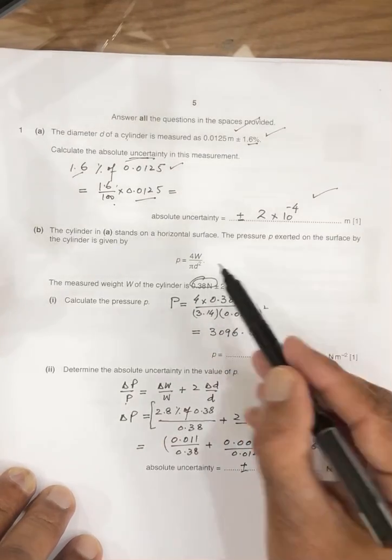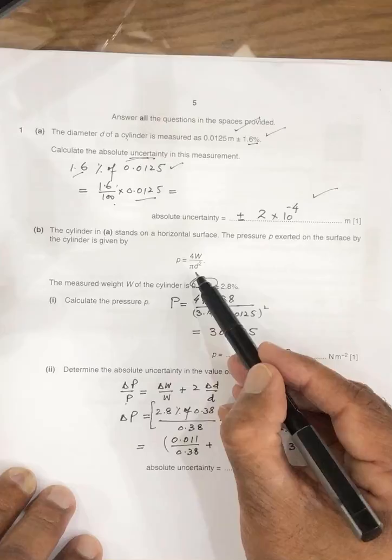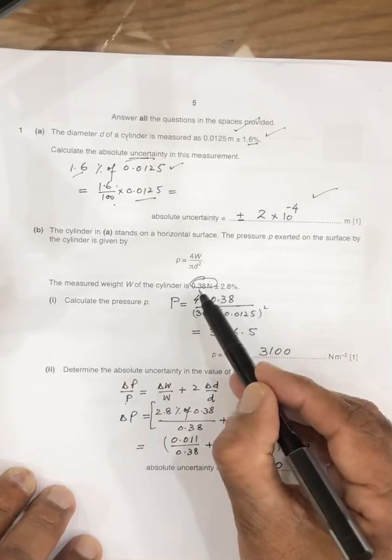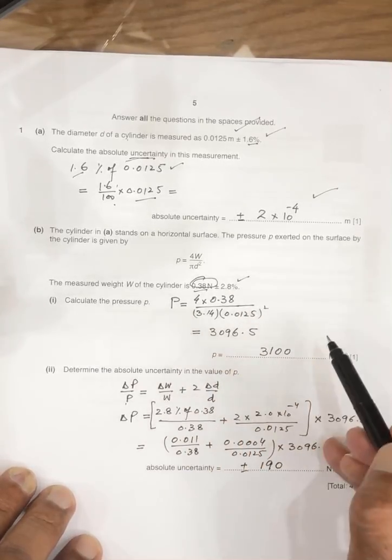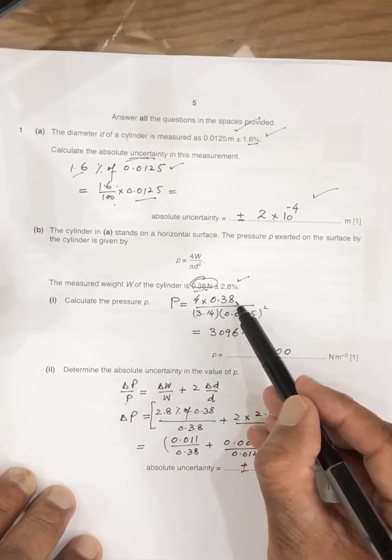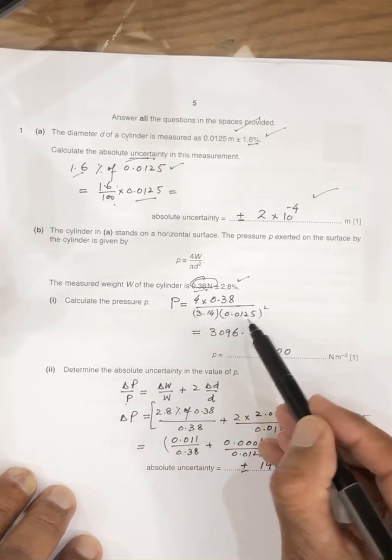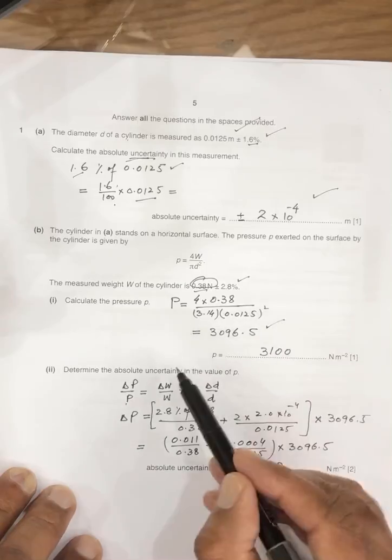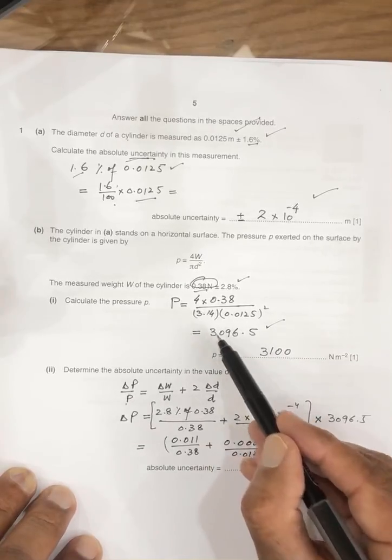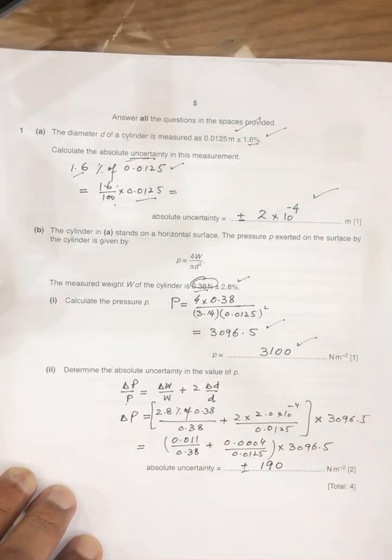Next is pressure, 4 times W divided by pi D square. Look, weight is given with percentage uncertainty, so put the value 4 multiplied by weight value divided by pi value, diameter square value, so answer is this, and then we have to write in two significant figures, so it must be 3,100.